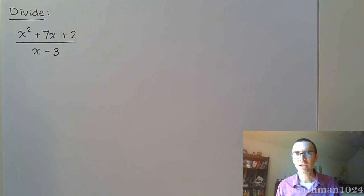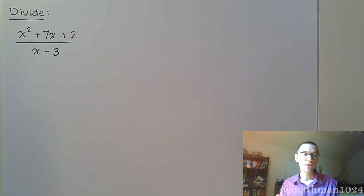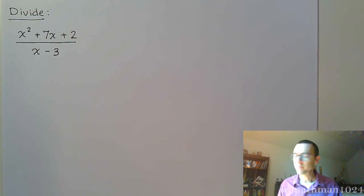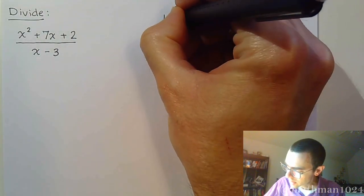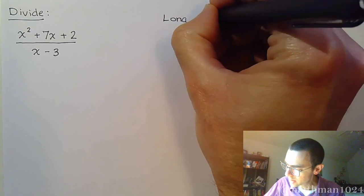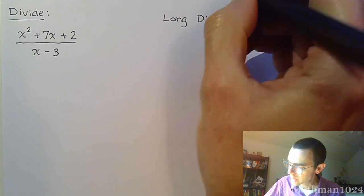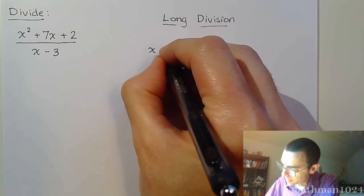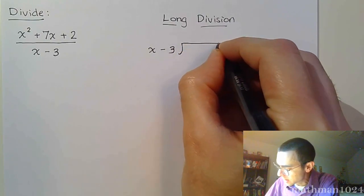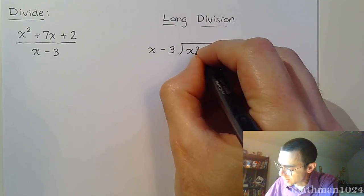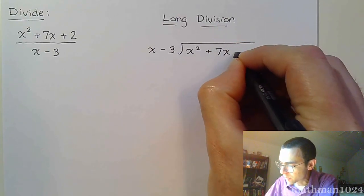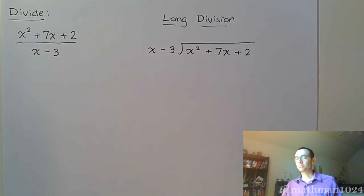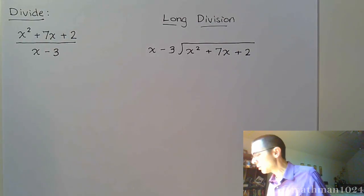We just finished talking about what division looks like when it comes to polynomials, so now we're going to put that into practice with this example. We're going to do it two different ways. One of the ways is by using what's called long division. If you took 0308 or 0310, long division would say take your divisor x minus 3, put that on the outside, and your dividend goes inside — the same kind of setup as regular long division except now you're dealing with polynomials.